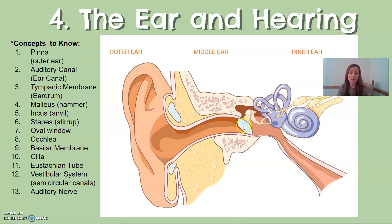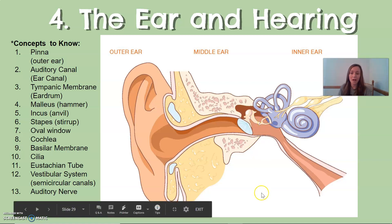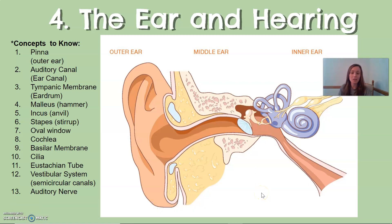The tympanic membrane has three little extensions that come off of it — three little bones called the ossicles. Those small bones vibrate as vibrations come in off the tympanic membrane and move them into the inner ear. The three bones are called the hammer, the anvil, and the stirrup, also known as the malleus, incus, and stapes.